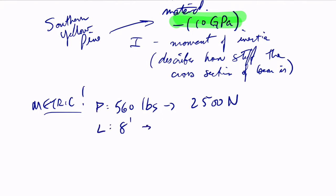L, eight feet high, is the same as 2.43 meters. E is 10 GPa, 10 times 10 to the ninth pascals. And then I, we can get that by knowing the cross section of that beam.